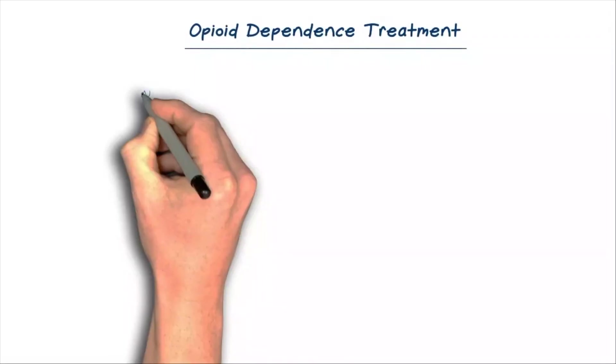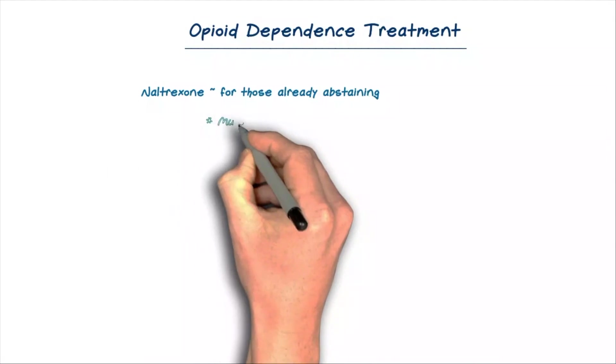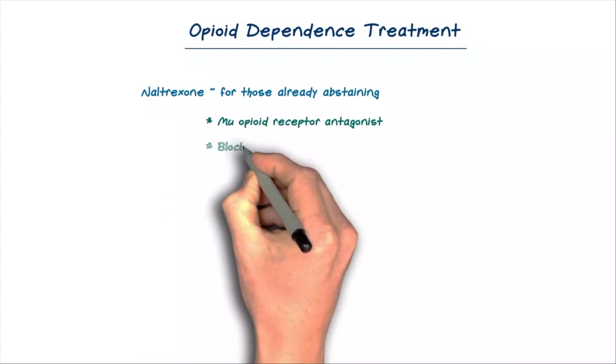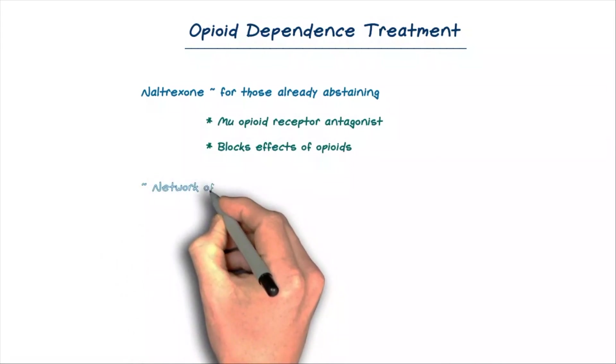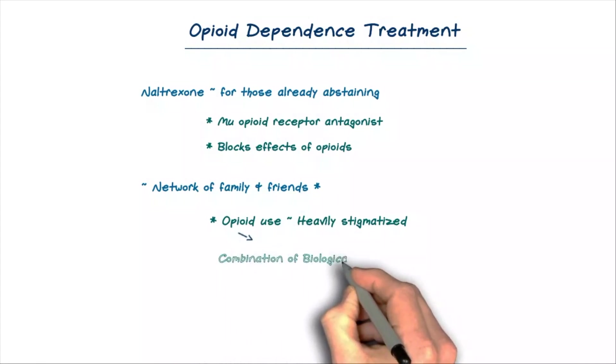Another medication called naltrexone can be used for people who are already abstaining from active opioid use. Naltrexone is a mu opioid receptor antagonist that blocks the effects of opioids and helps maintain abstinence. Finally, all of these approaches work best when an individual has a strong network of family and friends offering support. Opioid use still carries heavy stigma because usage is still tied to a notion of individual choice and moral failure. Even though we now know that opioid use is a consequence of biological, psychological and social factors, all of which need to be addressed to maximize the chances of recovery.